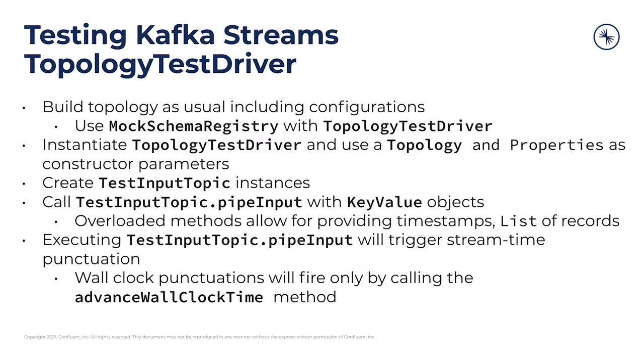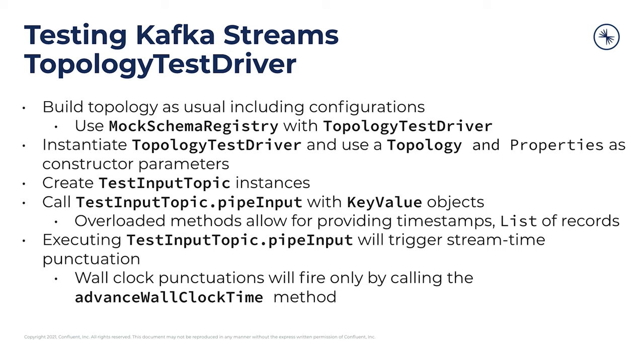So how do you actually use the topology test driver? You just build a topology as usual with the same configurations that you would use to set up your Kafka Streams application. You might wonder what if you're using schema registry — well, there's a mock schema registry that Kafka Streams provides, which you can use to mock the actual schema registry so that you don't need a schema registry cluster, similarly to how it does away with the need for a broker cluster. Once you have your topology, all you need to do is instantiate the topology test driver and pass it your topology and these configurations. This basically represents the Kafka Streams application itself.